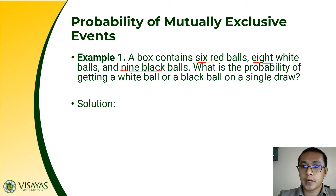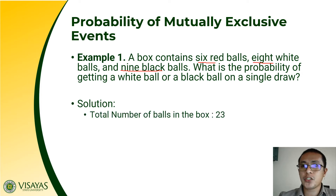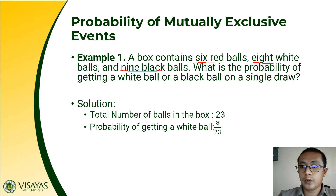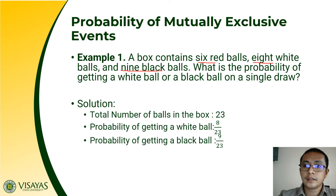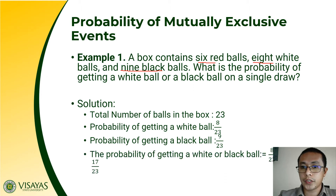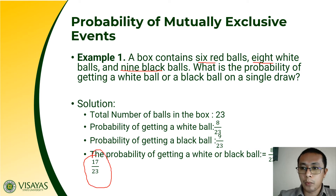Do you now have the answer for this problem? Let us compare the solution. The number of elements in our sample space is 23, since there are 23 balls in the box. The probability of getting a white ball out of 23 is 8 over 23, since there are 8 white balls. The probability of getting a black ball is 9 over 23, since there are 9 black balls. So the probability of getting a white or black ball is 8 over 23 plus 9 over 23, which equals 17 over 23. Take note that we simply add the probabilities of the two events since they are mutually exclusive.